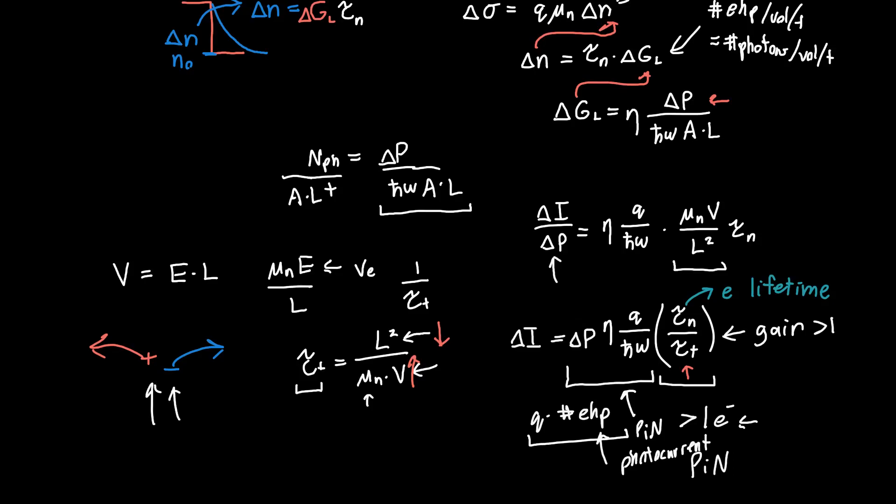Because this term here, this is exactly what you'll get for your PIN photocurrent where you just have the separation of these electrons and holes and then their subsequent measurement.